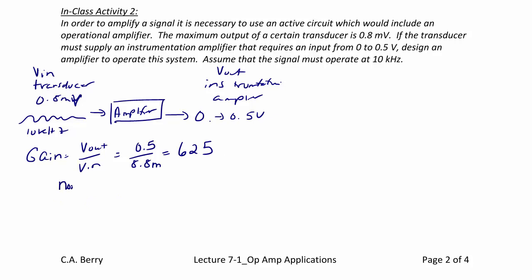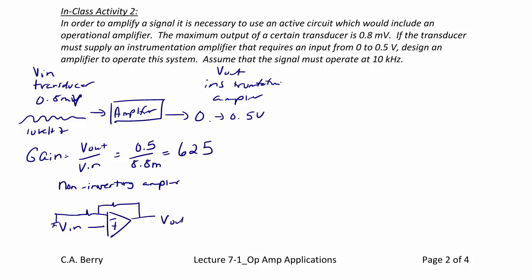In theory, you could use a non-inverting amplifier for this. With V_in tied to the positive terminal, an input resistor tied to ground, and a feedback resistor to V_out, to give a gain of 625, V_out over V_in must equal 1 plus R_F over R_I. So you could make the feedback resistor 624 kilohms and the input resistor 1 kilohm. However, we're operating at 10 kilohertz, and there is another characteristic of operational amplifiers called gain bandwidth limitation.